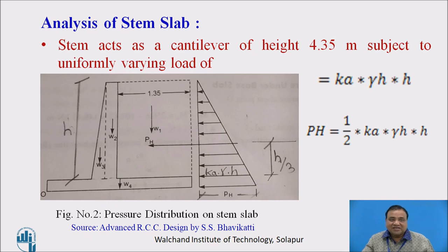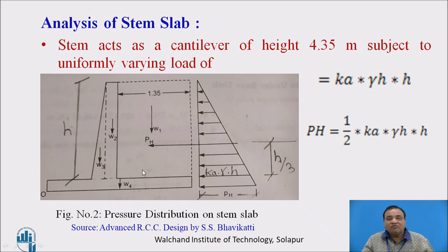Now, analysis of the stem slab. The stem acts as a cantilever of height 4.35 meters subjected to uniformly varying pressure as shown in the figure. The pressure at the base of the stem is k times gamma times h, where h is the height of the stem. We then find out the horizontal force pH, which is given by the area of the stress diagram: half k times gamma h, multiplied by h.